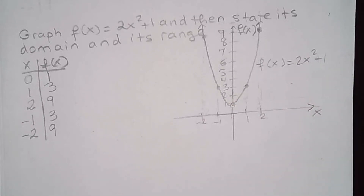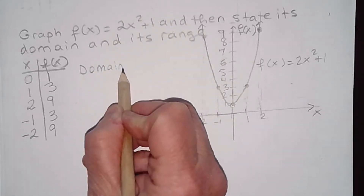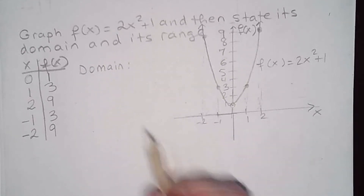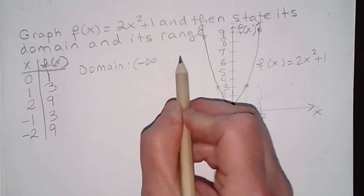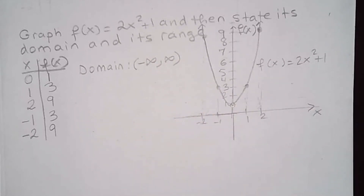They also want us to find the domain and the range. The domain, if you recall, is the set of all values of x for which f is defined. Well, f is defined for all values of x, so the domain is the set of real numbers — from negative infinity to infinity in interval notation.